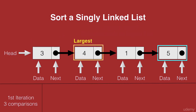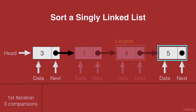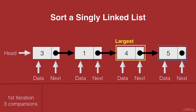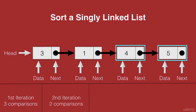We see that largest is less than 4, which means we mark 4 as largest. Now we check largest with the next of largest, which is the node with data 1. We see that 4 is greater than 1, which means we swap their positions. Then we see that 5 has already been visited and marked as the last node, so we won't be visiting 5 again. We now have 4 at the last second position, which is the second largest element. In our second iteration, we made 2 comparisons.